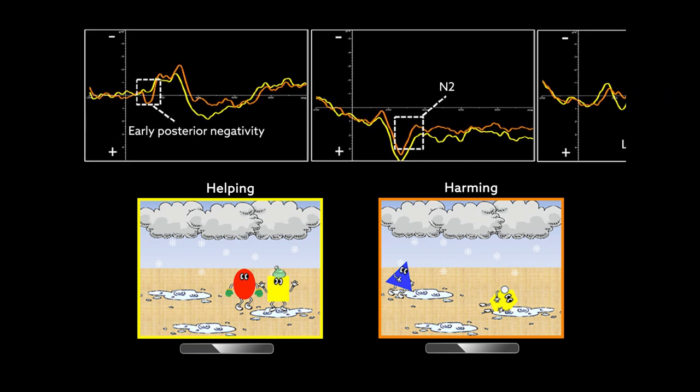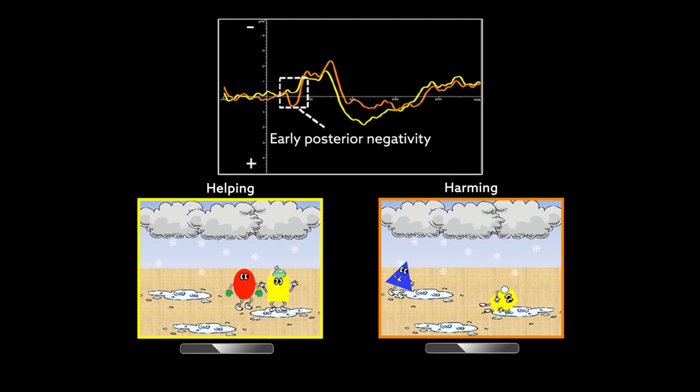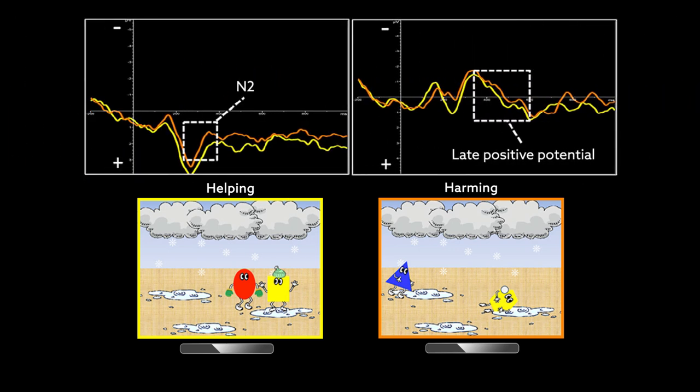Brain activity related to automatic emotional responses was greater for helping scenes, whereas activity related to the slower process of detecting and reacting to conflict was greater when the children viewed harming scenes.